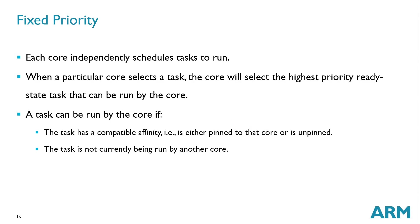In terms of priority, each core independently schedules tasks to run. When a particular core selects a task, it selects the highest priority ready-state task that can be run by that core. A task can be run by the core if it has compatible affinity — meaning it is pinned to that core or it is unpinned — and the task is not currently being run by another core.